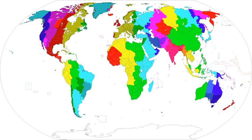UTC plus 6 is an identifier for a time offset from UTC of plus 6 hours. This time is used as standard time in several principal cities, including Dhaka, Tempu, Bishkek, and Almaty.